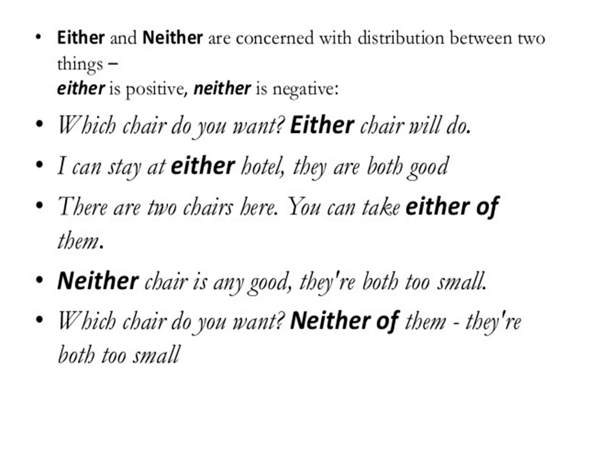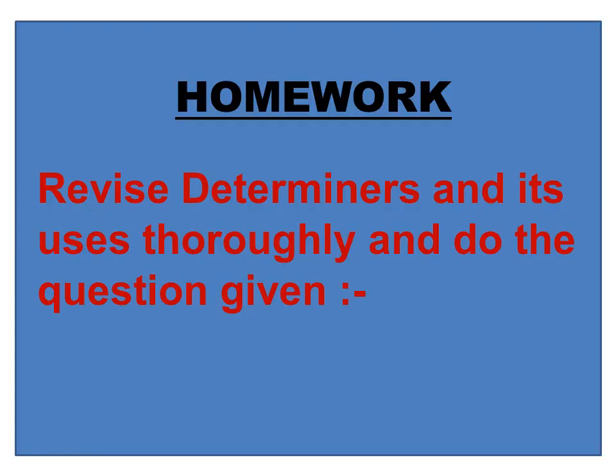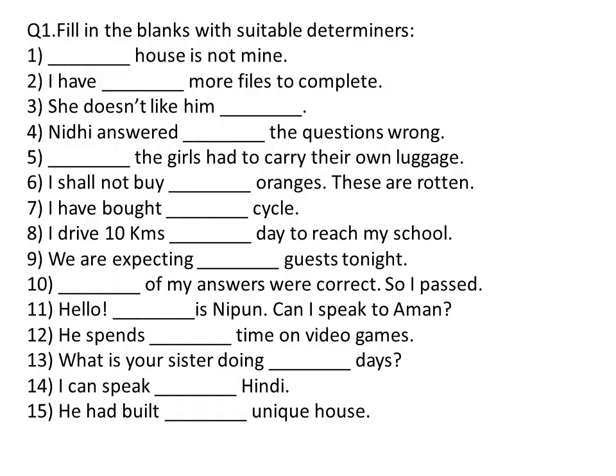None represents not one of a group of people or things — not any, meaning nothing. Your homework is to revise determiners and their uses thoroughly and answer the fill-in-the-blanks question with suitable determiners. Solve this question in your English practice notebook. You may also note down the uses of determiners in your practice notebook so that whenever you revise in future, you can get the rules easily.